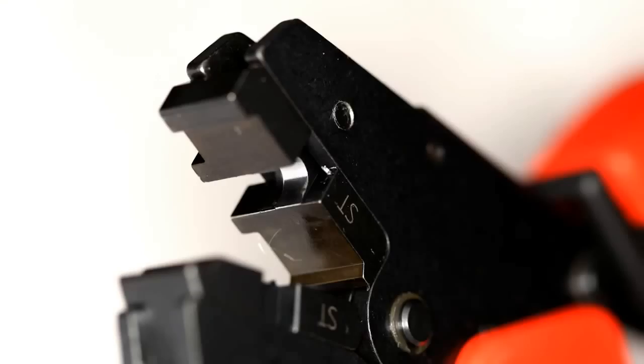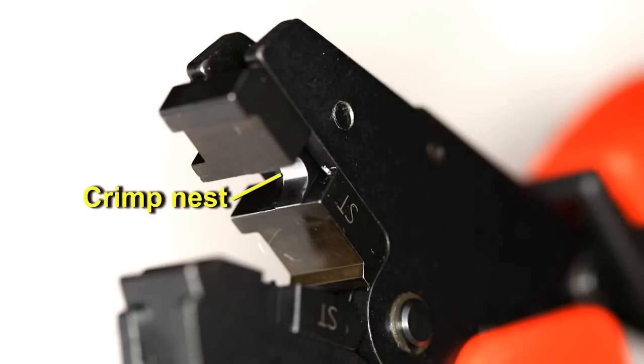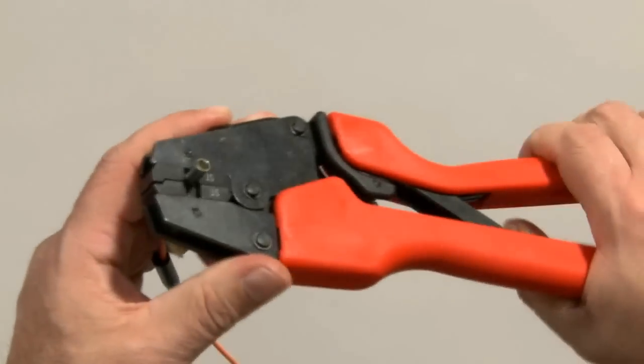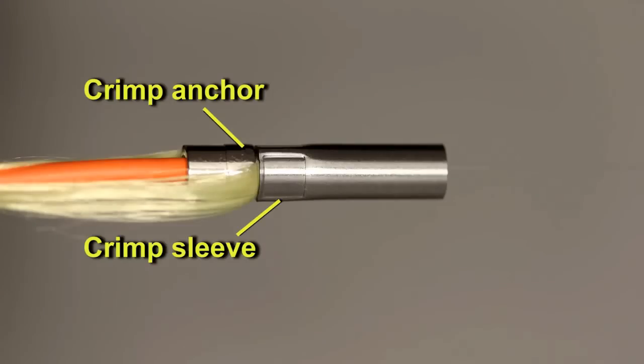Position the crimp sleeve in the tool so that the back edge of the sleeve is aligned with the crimp nest. Squeeze the handles until you hear a click. This will leave a depression on the cable sleeve where it is crimped to the cable anchor.